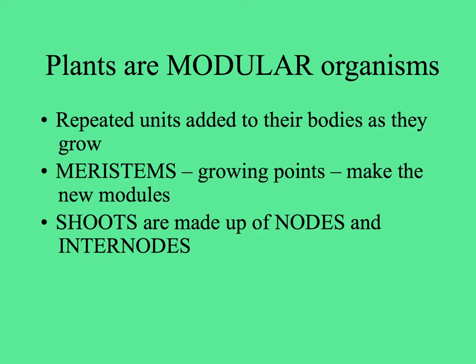The modules basically are new shoots, which are made up of nodes where the leaves are attached, and internodes, the spaces in between.